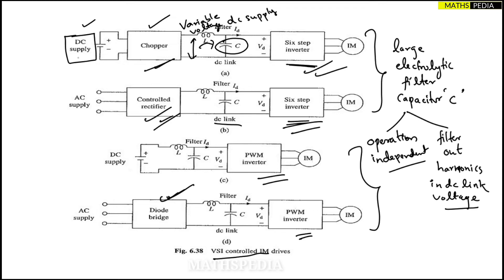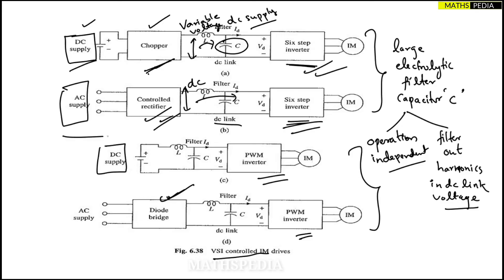Whenever a DC supply is present, a chopper is used to convert it to variable voltage DC supply for the inverter. When AC supply is present, a controlled rectifier is used to convert AC to DC as input for the six-step inverter. For the PWM inverter case, when DC supply is available it can be connected directly. When AC supply is present, a diode bridge rectifier is used to convert AC to DC for the PWM inverter.